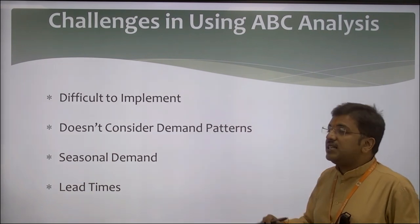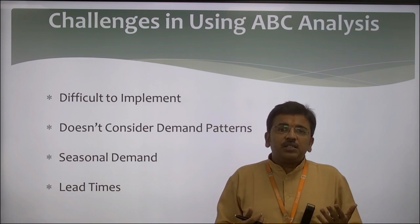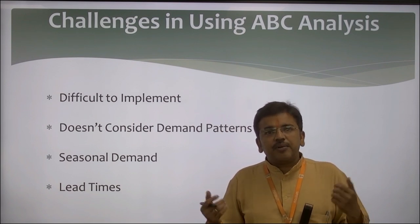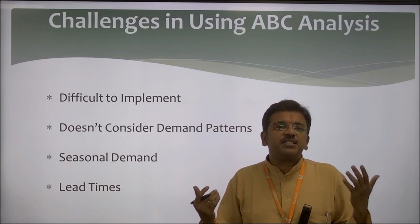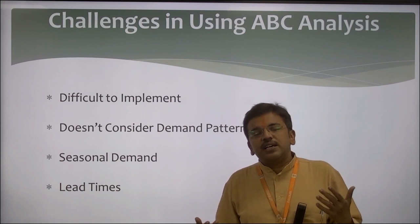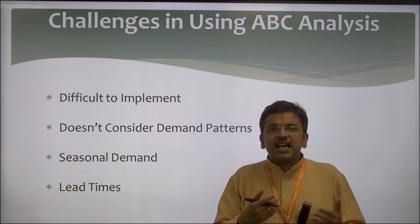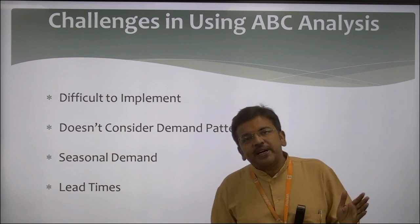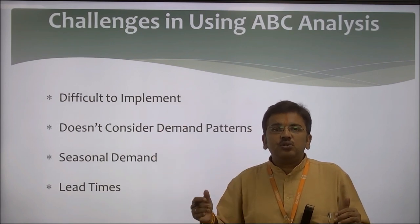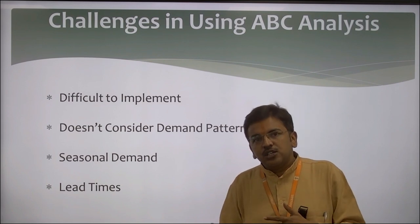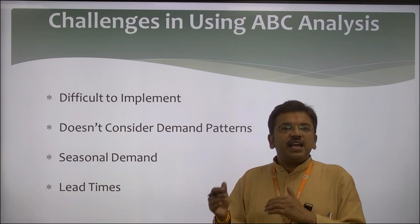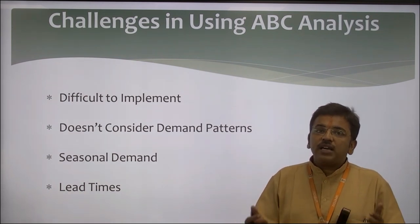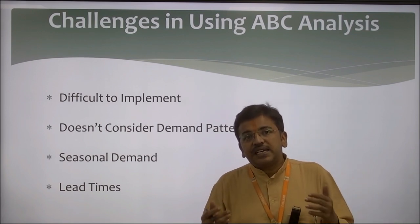The third challenge is seasonal demand. Some products have seasonal demand — for example, cold drinks are associated with summer, raincoats and umbrellas with the rainy season, and woolens with winter. Seasons have a significant impact on the demand of specific products. Seasonal demand automatically affects ABC analysis because ABC doesn't have a direct relationship with seasonal demand — you have to prepare products as per customer requirements in that specific season.